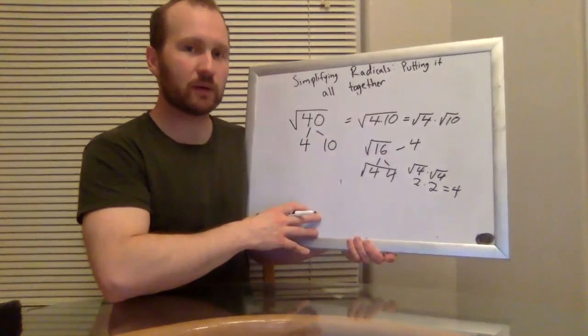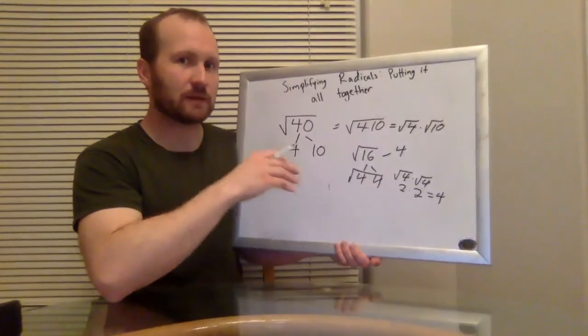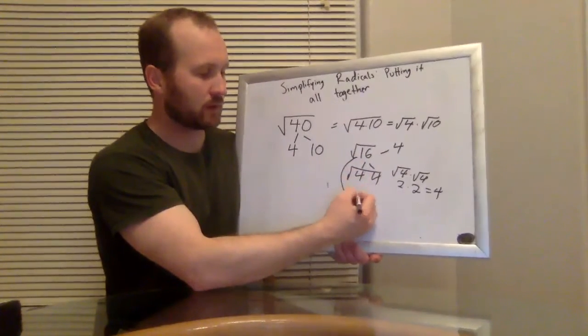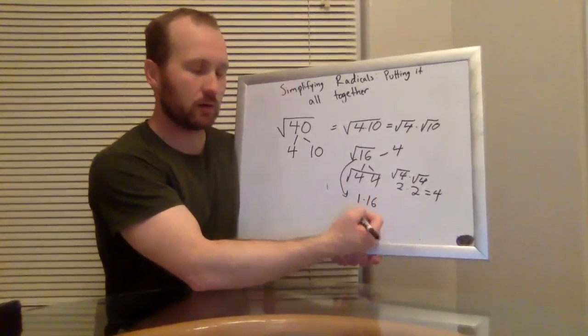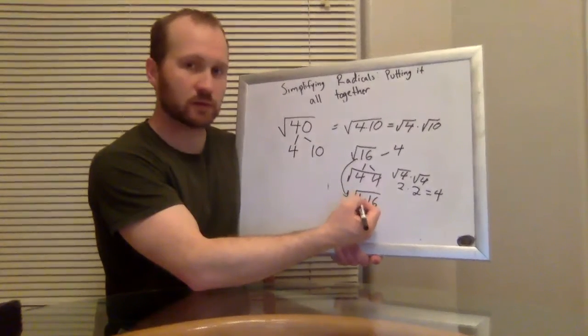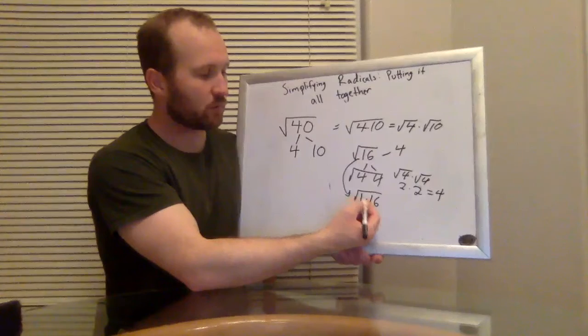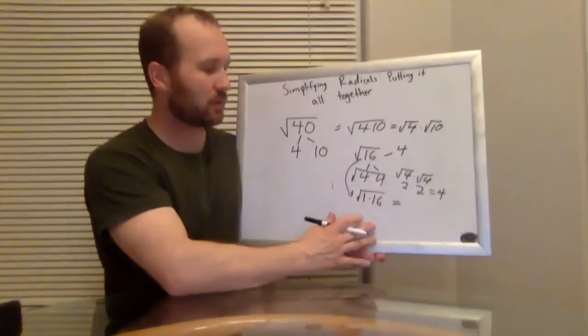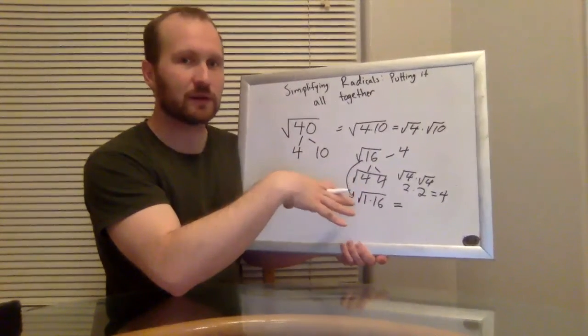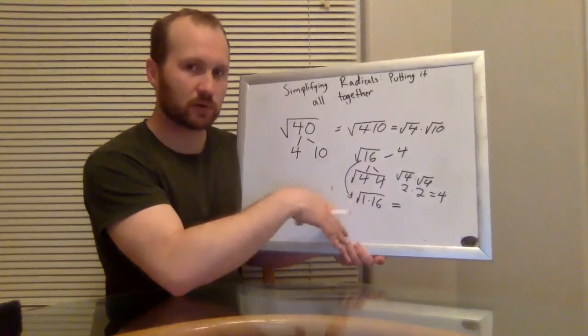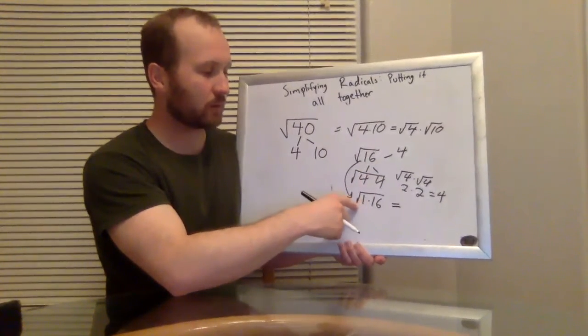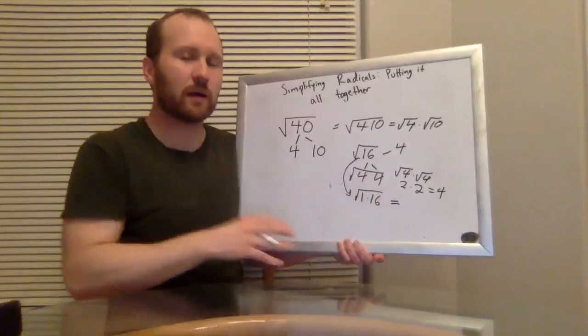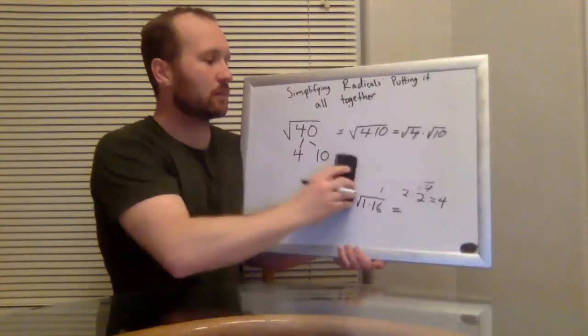One other way of remembering this or thinking about it is this kind of has to work because any number, any number is the same thing as one times that number. And the square root of one is just one. So if the square root of one times 16, that has to be the same thing as the square root of 16. And this is one way you can remember that square roots don't work like this for addition, right? If I were to add one, that would totally change my number. But because I'm multiplying, the square root preserves the identity of that 16. So these are just a couple ways to think about and remember that square roots can be split up across multiplication.